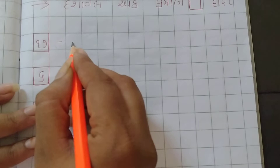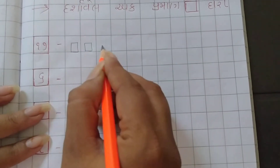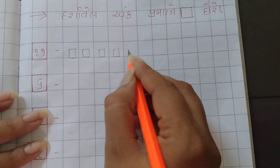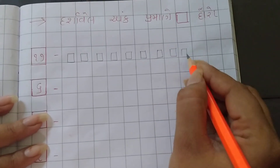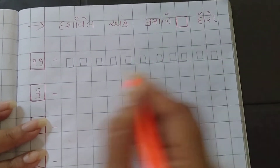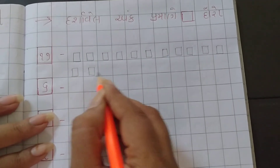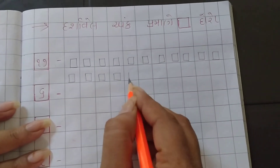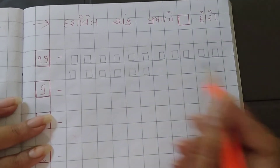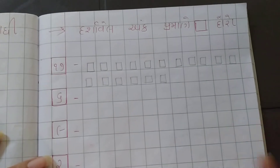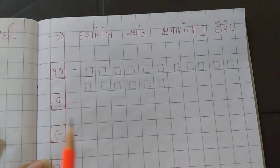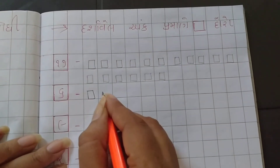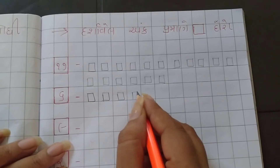કેટલા લખેલા છે? ચૌદ — ચૌદ ગોતીને રાઇટ કરો. ટોરસ માં ચૌદ ગણવાના છે — એક, બે, ત્રણ, ચાર, પાંચ, છ, સાત, આઠ, નવ, દસ, અગ્યાર, બાર, તેર, ચૌદ — બરાબર. ચેક્સ માં મોટા ચોરસ કરવાના નથી, નાના-નાના ચોરસ કરવાના છે.